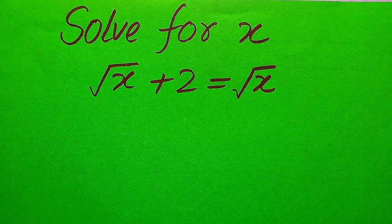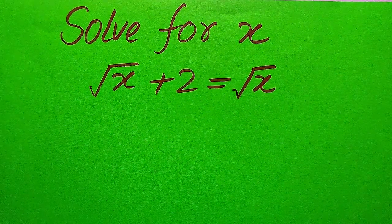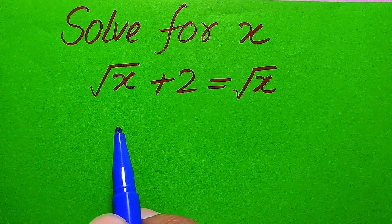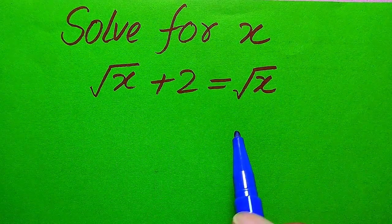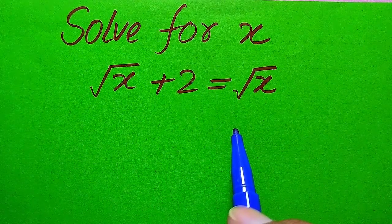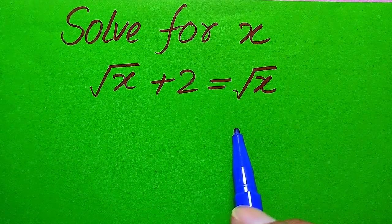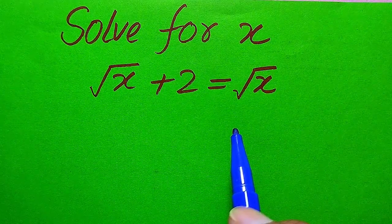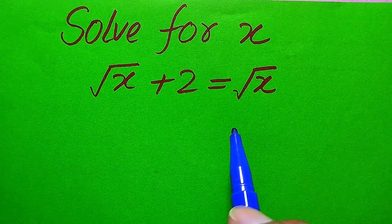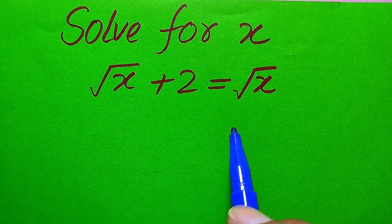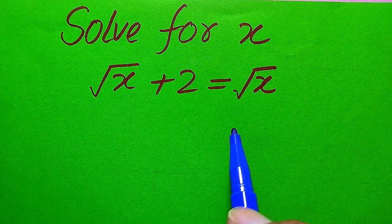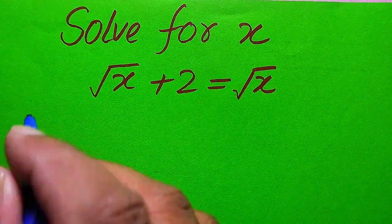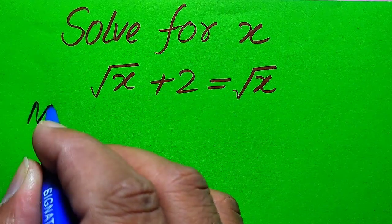Hello everyone. How to solve this problem for the values of x if we have square root of x plus 2 equals square root of x? We solve this problem for the values of x. Here we need to find all the roots of this equation, and at the end we will verify which of the roots are solutions and which are extraneous roots.